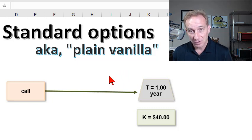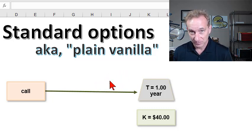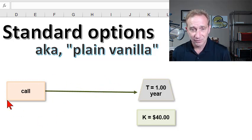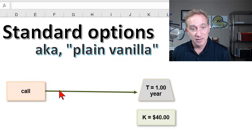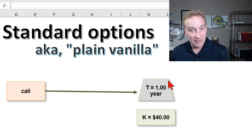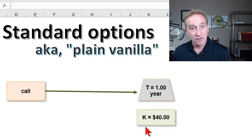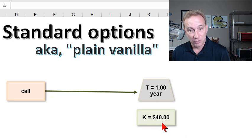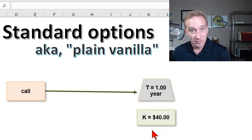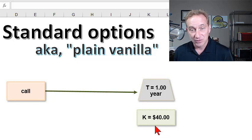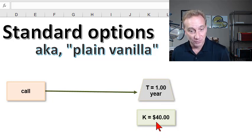This standardization allows them to be traded on the exchange and gives traders, buyers and sellers of the options, greater liquidity. So a standard option — a plain vanilla option — would be the call option we usually think about, with a single exercise date, for example one year, and a single fixed strike price, for example $40. So in this case, a one-year call option with the right but not the obligation to purchase the asset for the strike price of $40.